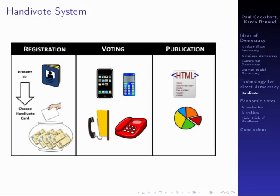We call our system HandyVote, after the German term for a mobile phone. You start off by registering to vote. Any voting system needs a registration procedure to ensure that only eligible voters vote and that each person only has the opportunity to vote once. This is done by people getting a voting card, but the way they get the voting card has to be randomised. The simplest way to randomise it would be when you go to register to vote, you put your hand in a jar and pull out a voting card in a sealed envelope, so no one knows which voting card and which voter's number you've got.